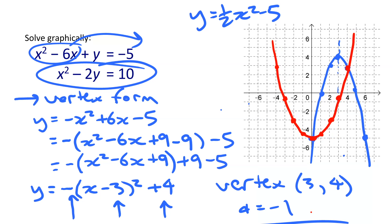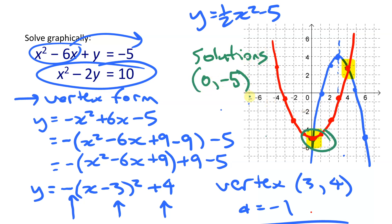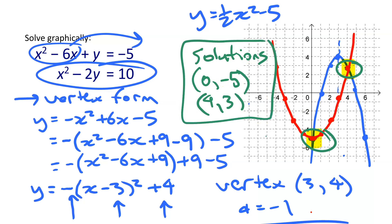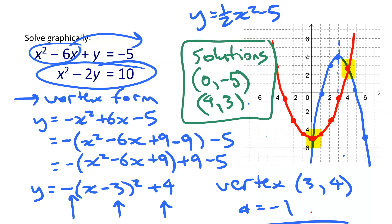Looking at the graph we can see two intersection points. The solutions to this quadratic-quadratic system are (0, -5) and (4, 3). These intersection points are the solutions to the original system. We could verify by substitution as in example 1, but instead we'll use technology to solve it again graphically.